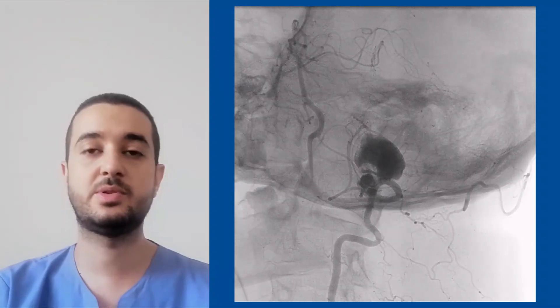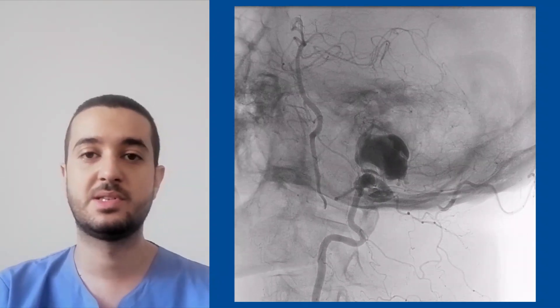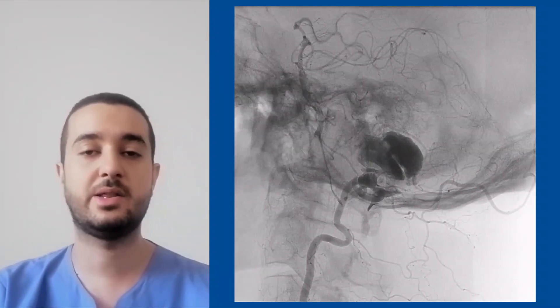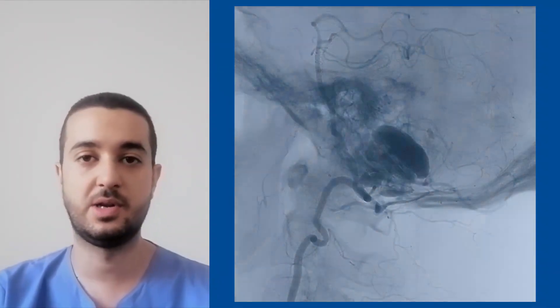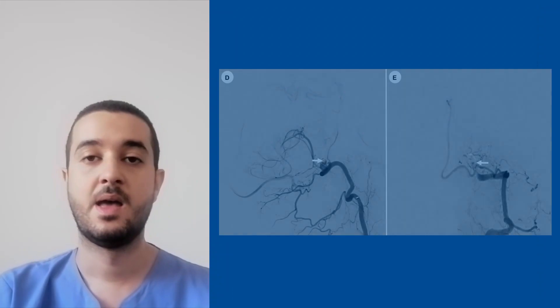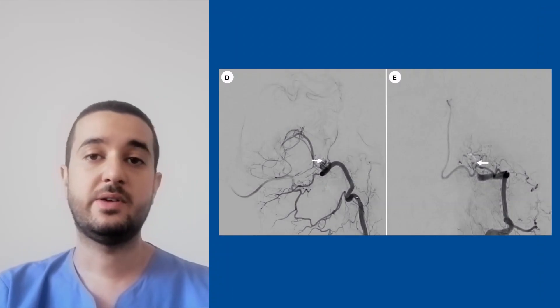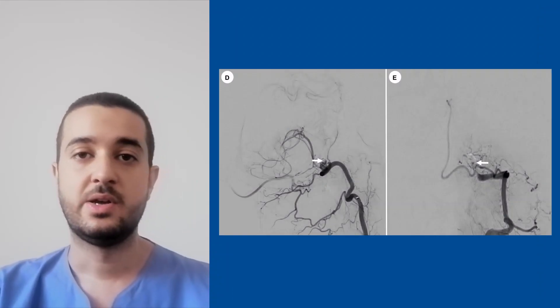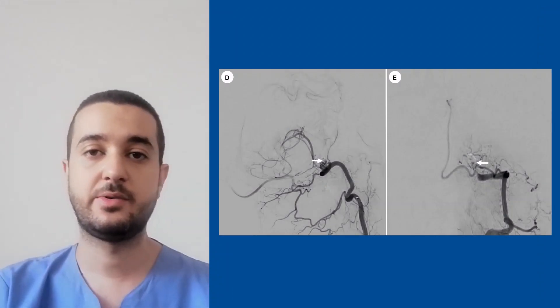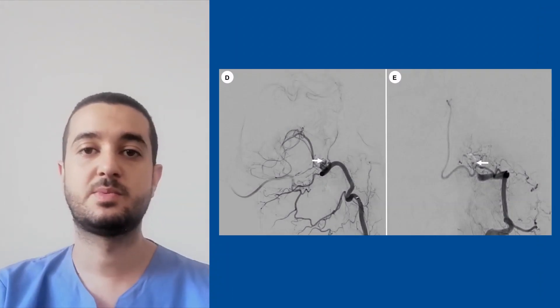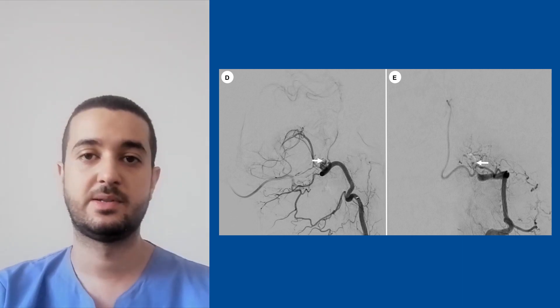We urgently proceeded to measurements, microcatheter placement, and endovascular coiling. The final angiography showed near-complete obliteration of the aneurysm with a small neck remnant.